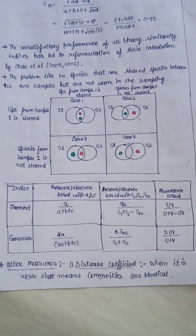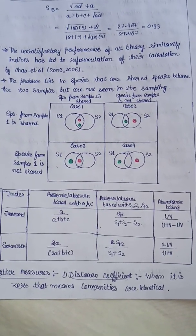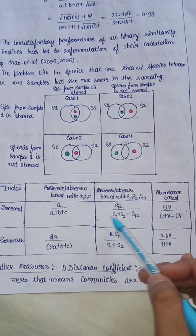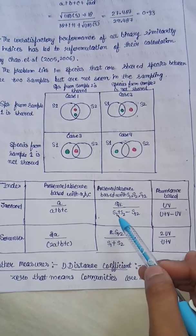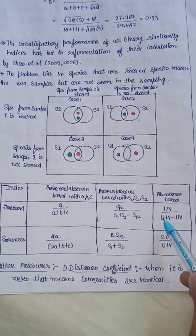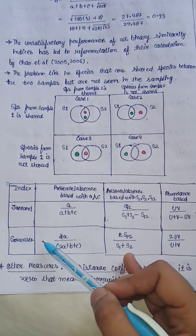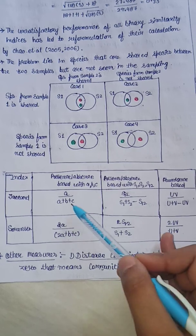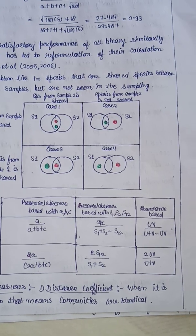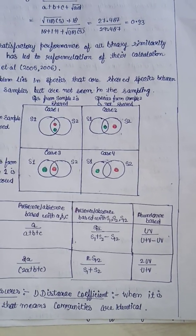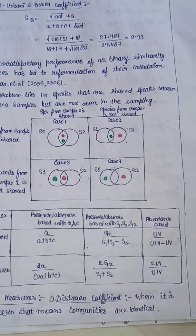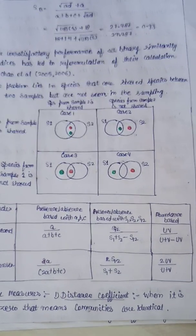Based on this reformulation, Chao et al. produced a table. For the Jaccard index, the original presence-absence formula is S12 / (S1 + S2 − S12), and the abundance-based version is UV / (U + V − UV). For the Sorensen index, the original is 2a / (2a + b + c), and the abundance-based version is 2UV / (U + V). Here, abundance refers to how frequent species are relative to others in the community.